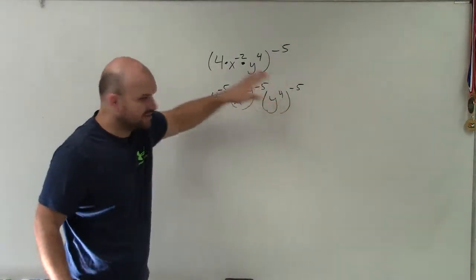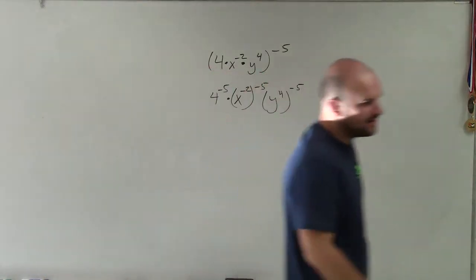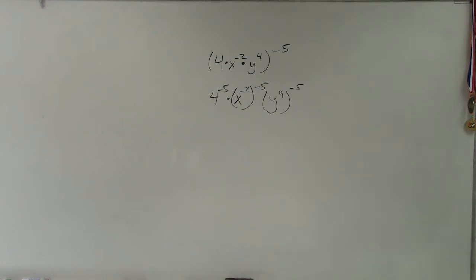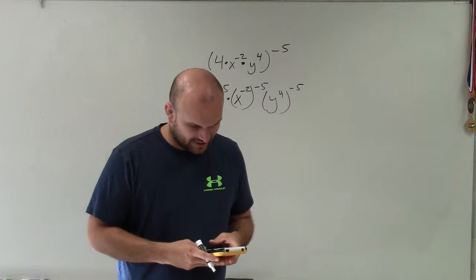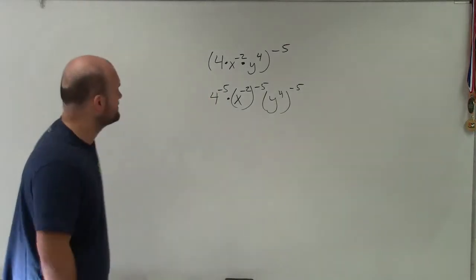So I distributed the negative fifth to each and every one of those powers. Now, I do not remember 4 to the fifth power off the top of my head, so I am going to have to do that. Raised to the fifth, that's 1,024. You should remember that.